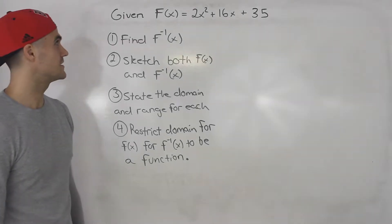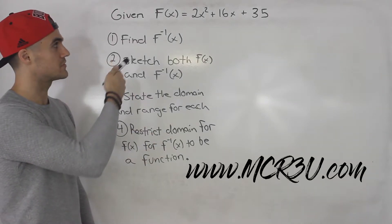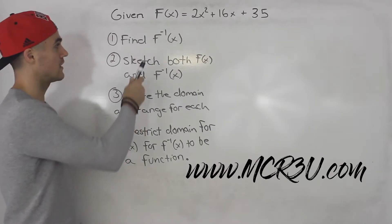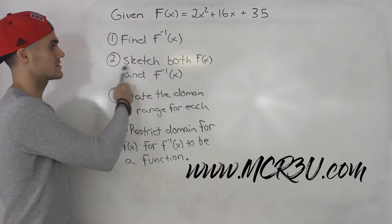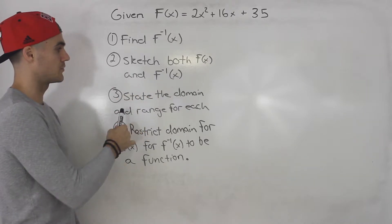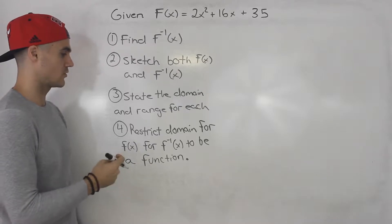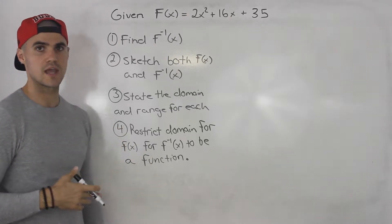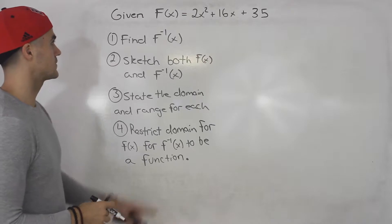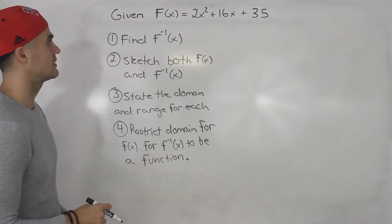Welcome back. In this video we're given f of x equals 2x squared plus 16x plus 35, and we have to find: number one, the inverse; sketch both the function and the inverse; state the domain and range for each; and then restrict the domain for f of x in order for the inverse to be a function. So let's get started with number one — we have to find the inverse.